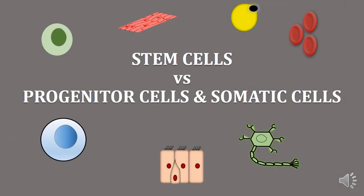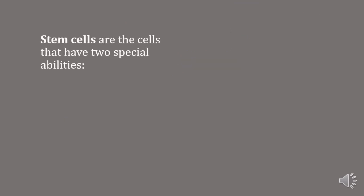Stem cells versus progenitor cells and somatic cells. Stem cells are the cells that have two special abilities. One, they can self-renew by cell division.